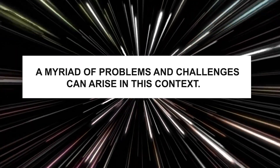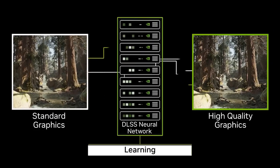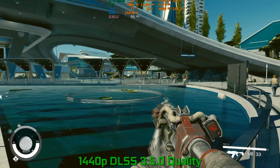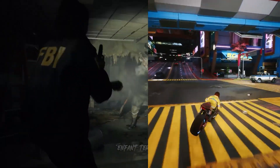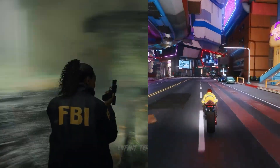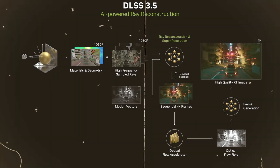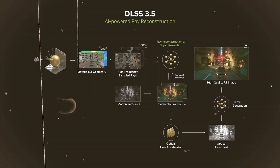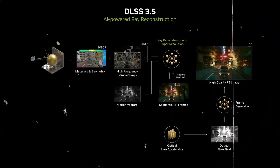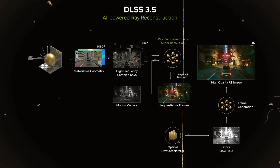A myriad of problems and challenges can arise in this context, so NVIDIA is actively addressing these issues through the implementation of an AI-powered network to refine the process. DLSS 3.5 will enhance the quality and performance of typical ray-traced games. With DLSS 3.5, we are introducing Ray Reconstruction, which runs on all RTX GPUs to provide the best image quality for ray-traced effects by incorporating additional inputs from the game engine and a new AI model that does both super-resolution and ray reconstruction at the same time.